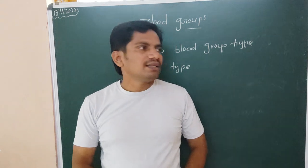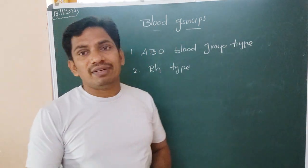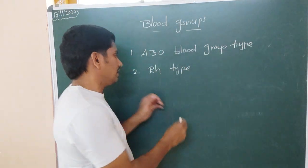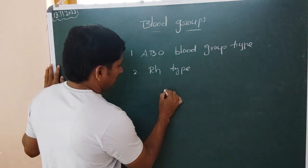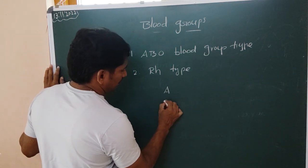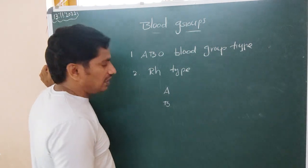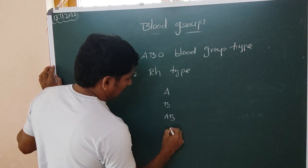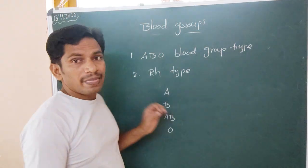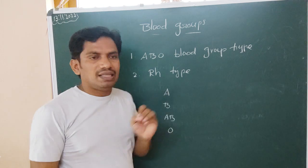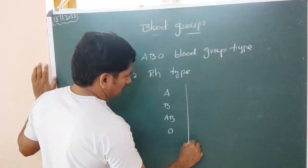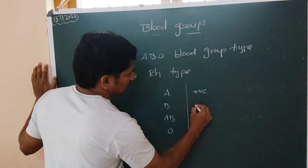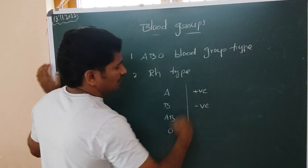Here is the thing — all people do not have the same type of blood group. Some people may be A group, some people's blood group belongs to B, some may be AB, and some have O. Along with that, they may be positive or negative blood groups.